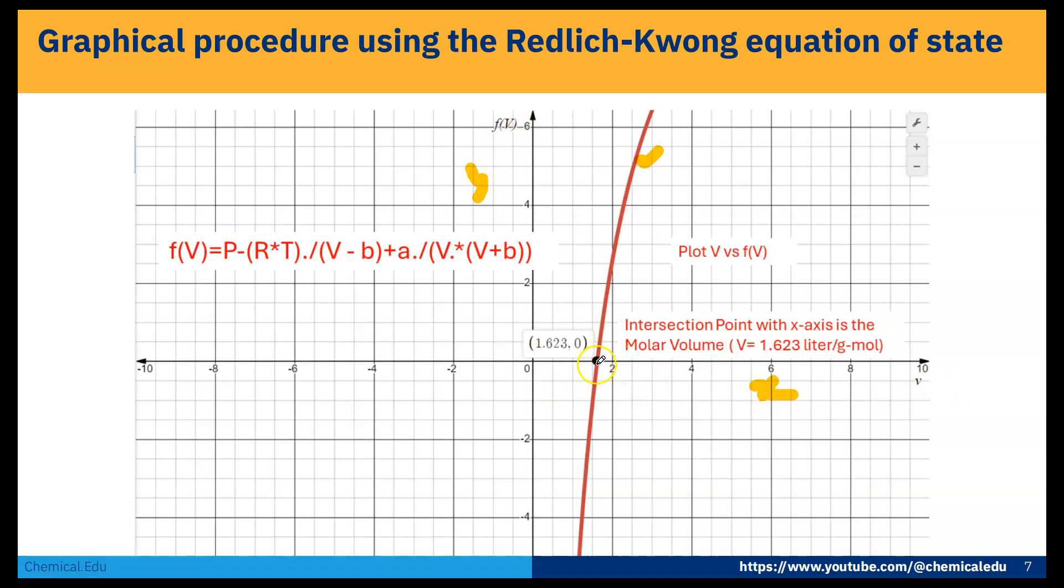The x-axis intersects with this curve at a particular point of V where f of V is 0, and V is 1.623. When V is 1.623, f of V is 0, so that is the molar volume we can get using the Redlich-Kwong equation. Ultimately, we find V equals 1.6227 liter per mole.